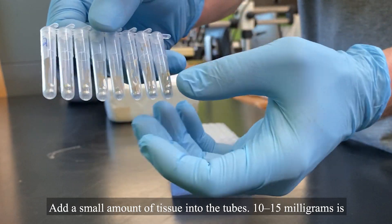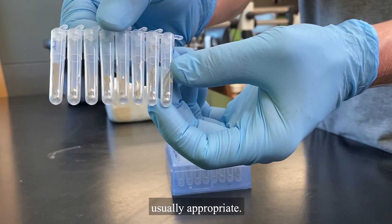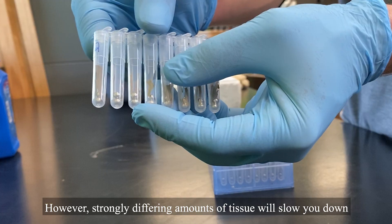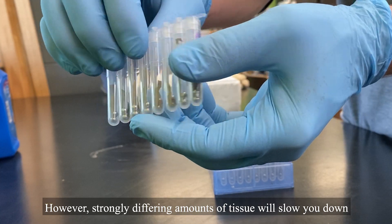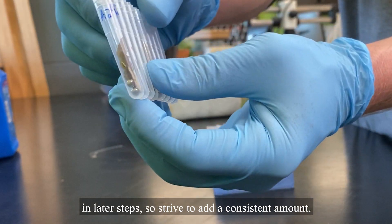Add a small amount of tissue into the tubes. 10-15 milligrams is usually appropriate. Don't weigh every one, just weigh one as an example and eyeball the rest. However, strongly differing amounts of tissue will slow you down in later steps, so strive to add a consistent amount.